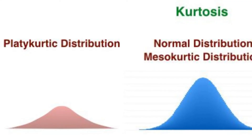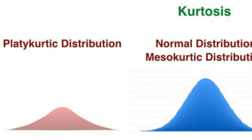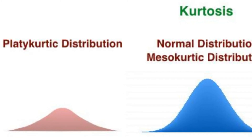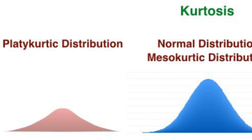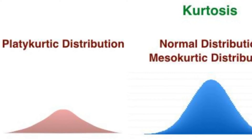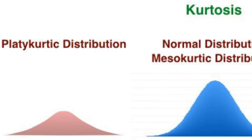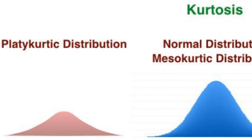A platykurtic distribution is the opposite of leptokurtic. In this case we have heavy tails, meaning most of the variables cluster around the tails of the distribution, which results in a very short or almost flat peak. Most of the variables cluster around the tail while few cluster around the peak.